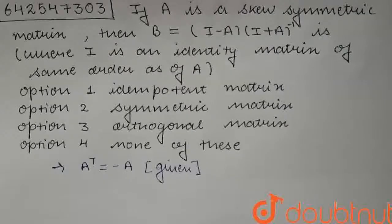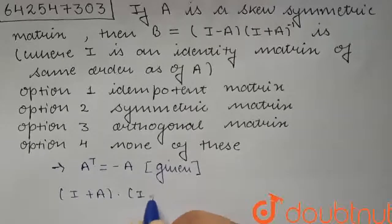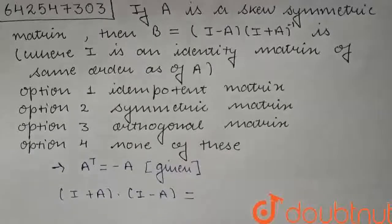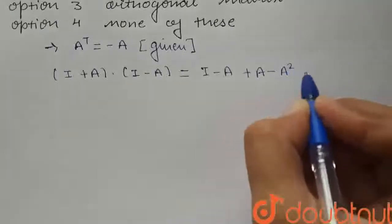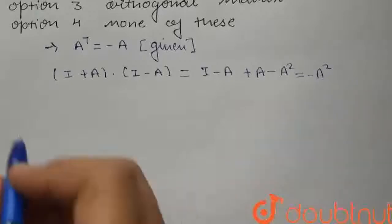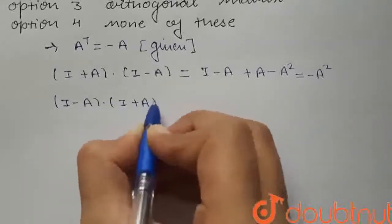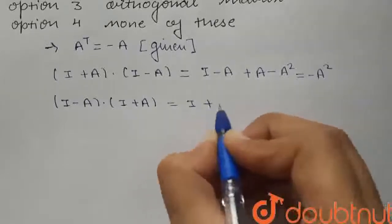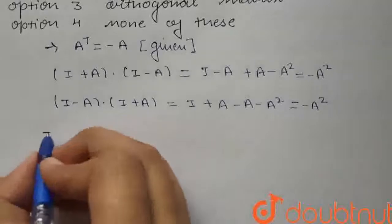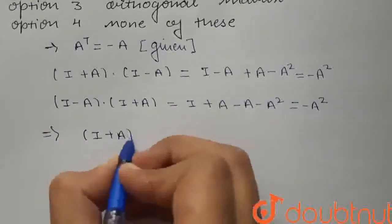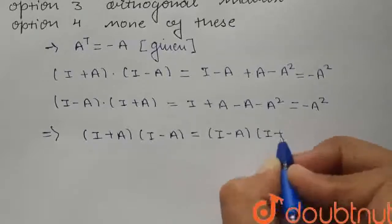Before starting, we need to know some points. If we multiply (I plus A) into (I minus A), we get I minus A plus A minus A squared, which equals I minus A squared. Similarly, (I minus A) into (I plus A) gives I plus A minus A minus A squared, which also equals I minus A squared. So (I plus A)(I minus A) equals (I minus A)(I plus A).